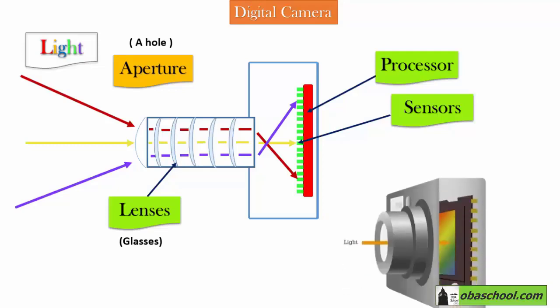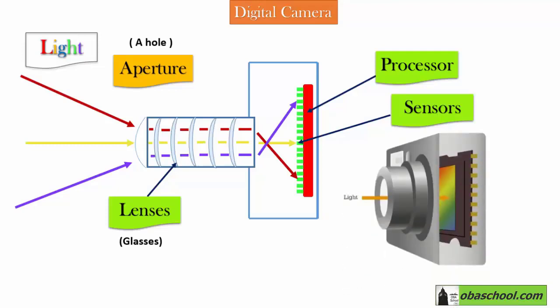We all know that cameras are used in everyday life to take pictures of anything, such as a natural view. This is another photo that shows the camera, the sensors, and how the light passes through.